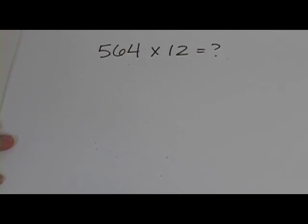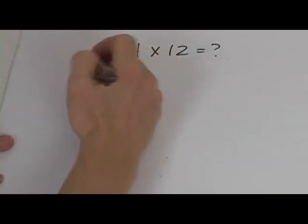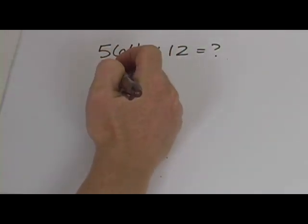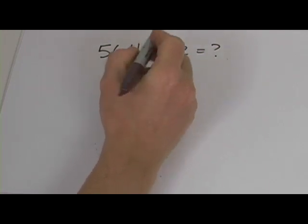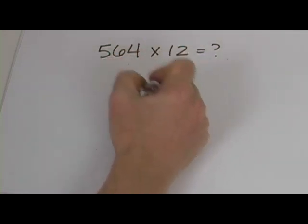Now, it's very similar to the 11s, only we're going to do some doubling. And let me show you what I mean. The first thing we want to do is double the 1s digit. So we're going to take the 4 and double it. So what would that be? That would be an 8.